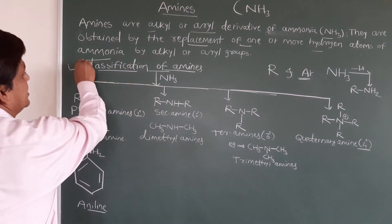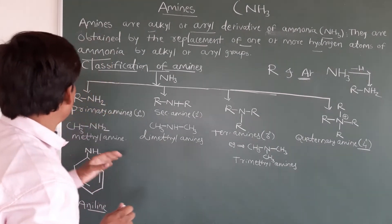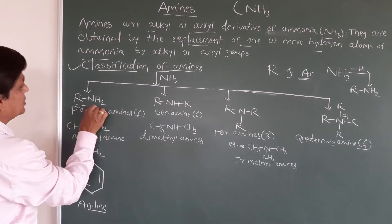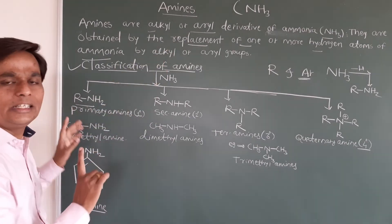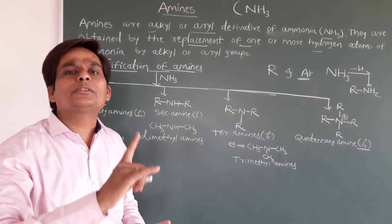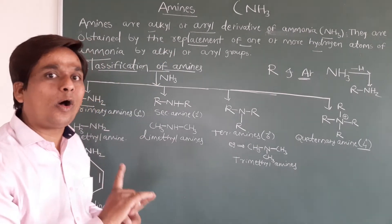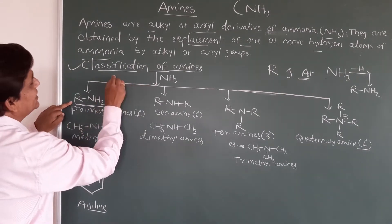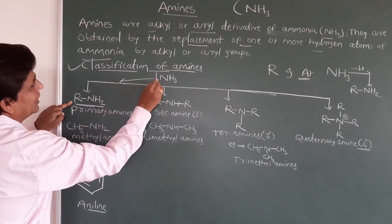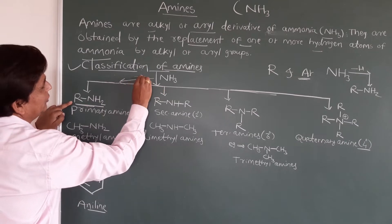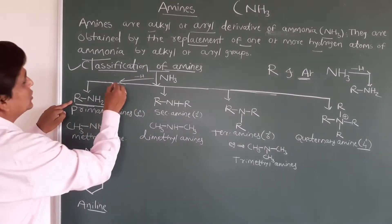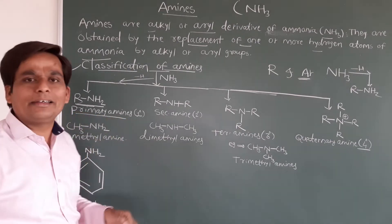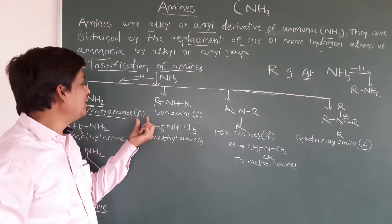Now we will see the classification of amines. Primary amines are represented as R-NH2. From ammonia (NH3), one hydrogen is replaced by one alkyl or aryl group. You can check it: in NH3, if you remove one hydrogen and substitute one R group, you get a primary amine — also called a 1° amine.